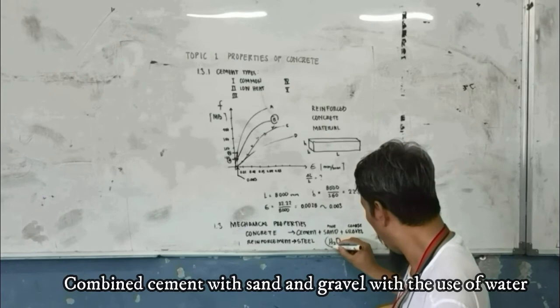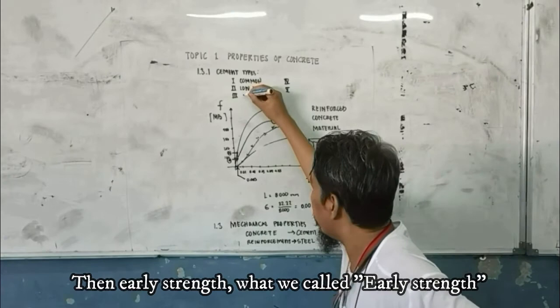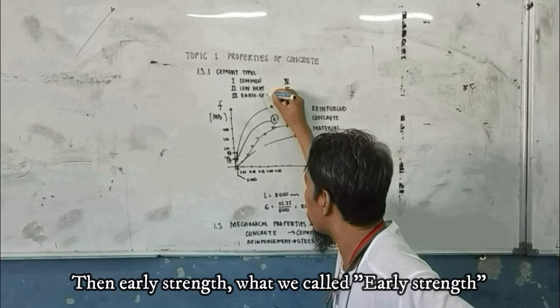The chemical process is what we call hydration. And then, early strength. What we call early strength type of cement.